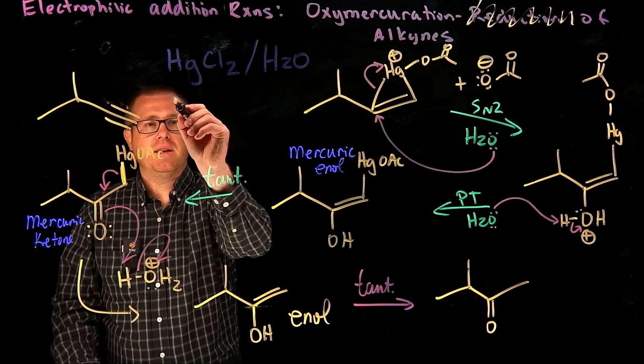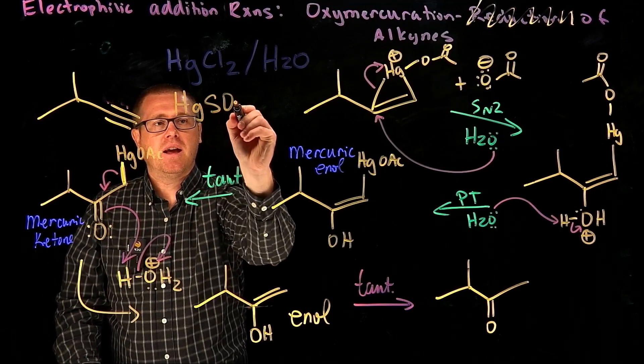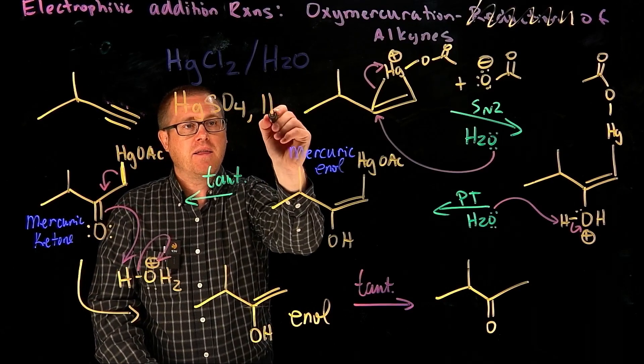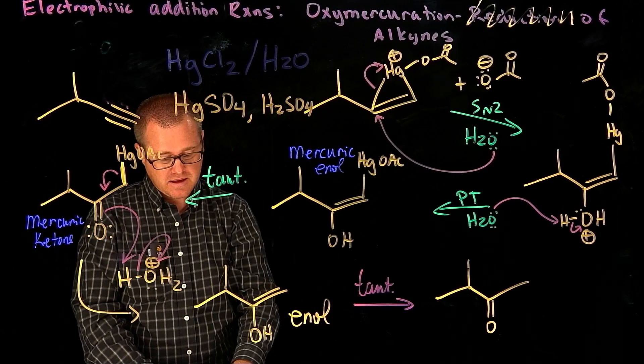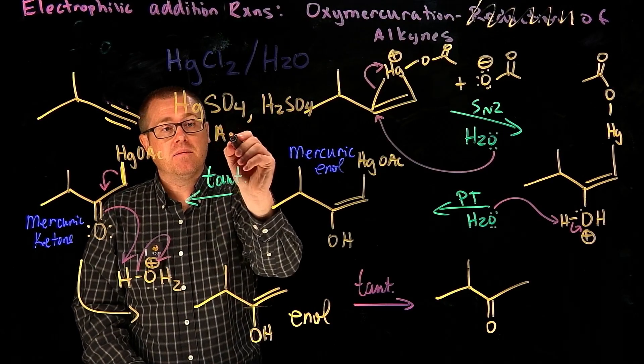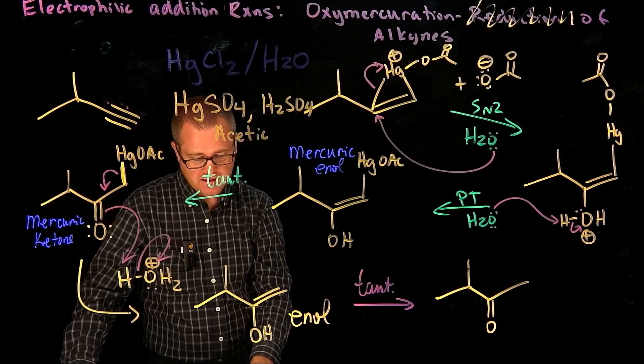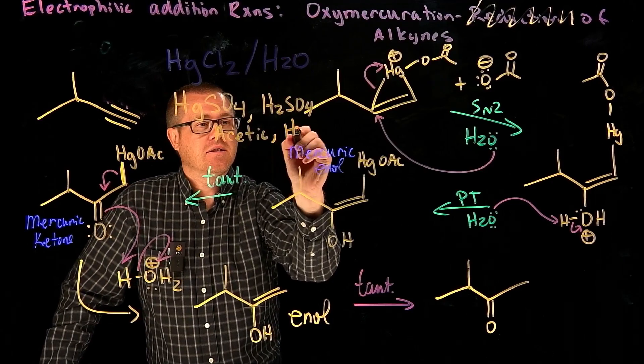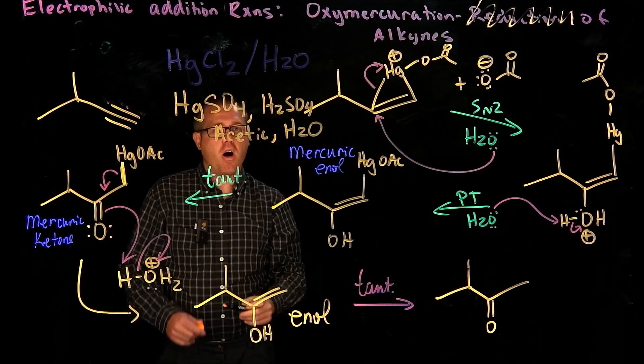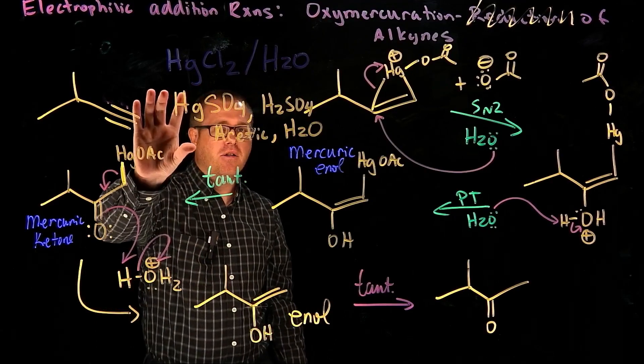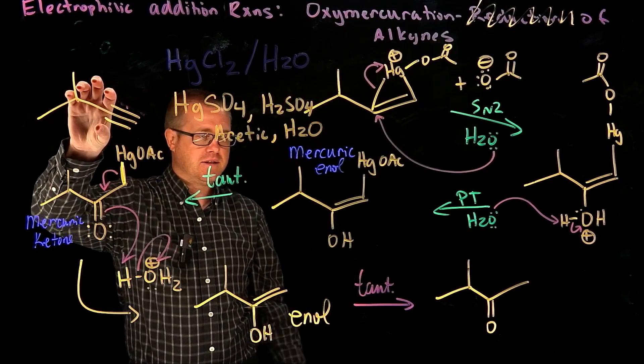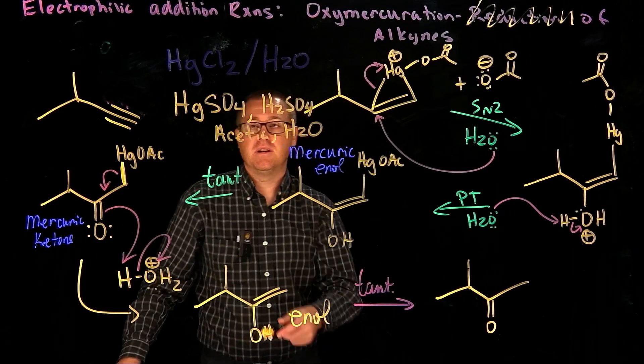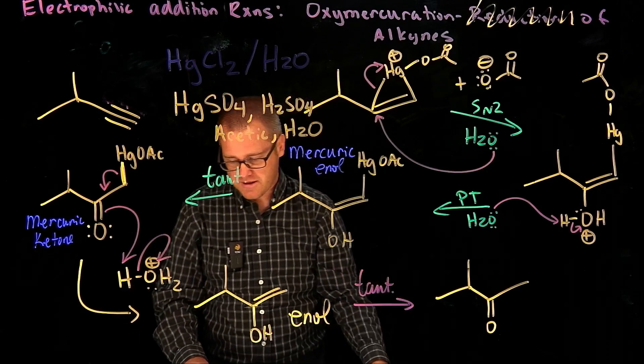What's another one? Mercury sulfate, HgSO4. If you add some mercury sulfate and then some sulfuric acid and a little bit of acetic acid—we really like our acid in there—and some water, if you have all those together, you will go from this species all the way to that species. Just want to make you aware that there's other forms of mercury that you can use to make these transformations happen.